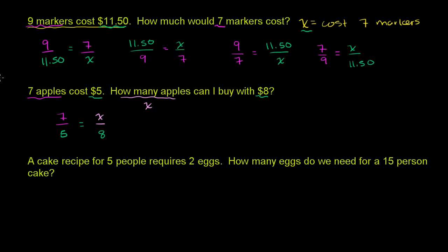You could also say the ratio between seven apples and x apples is going to be the same as the ratio between the cost of seven apples and the cost of eight apples. And obviously you could flip both sides of either of these equations to get two more equations. Any of these would be valid equations.